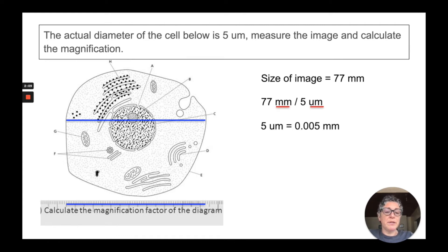What we'll do is convert the micrometers by dividing by 1,000. So 5 micrometers is equal to 0.005 millimeters. Now we can use the 0.005 millimeters in place of the 5 micrometers and our units are the same.